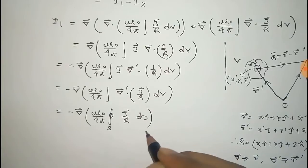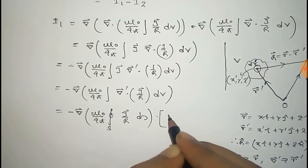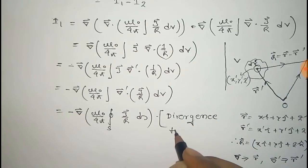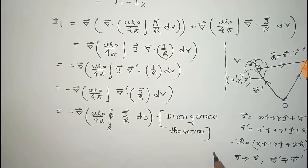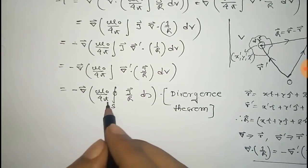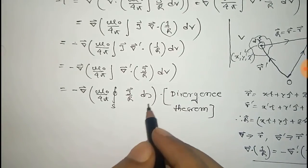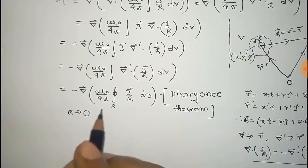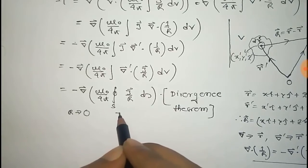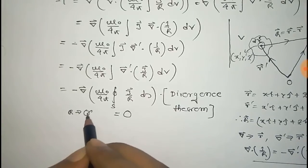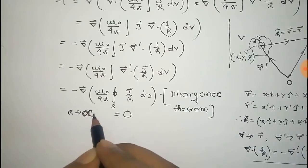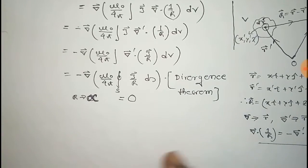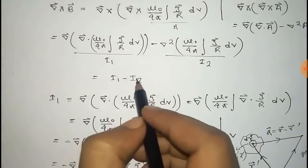Using the divergence theorem, the integral of div A dv equals the closed surface integral of A·dS. Here the surface tends to infinity, so r tends to infinity, and at infinity the current density vanishes—current density is zero at infinity. So as r tends to infinity, I1, the current density term, becomes zero. Therefore I1 equals zero.